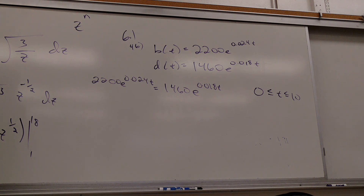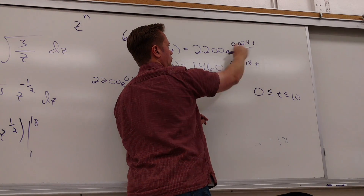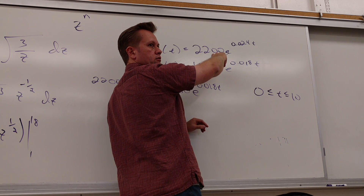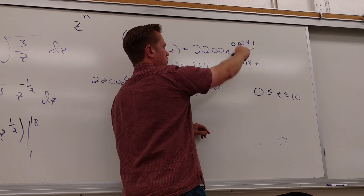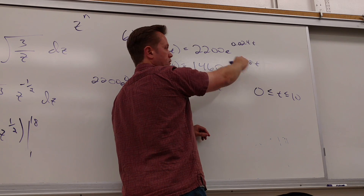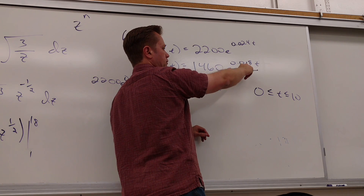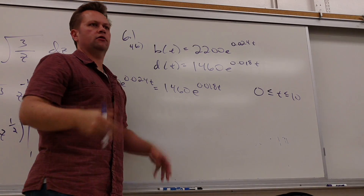Will they ever equal each other? No — because T is the same, so they're different values. At T=0, where does this start? 2,200. At T=0, this one is lower. This one is growing faster than that one. So this starts above that one, and it's growing faster. This will never catch that — so they're not going to cross.